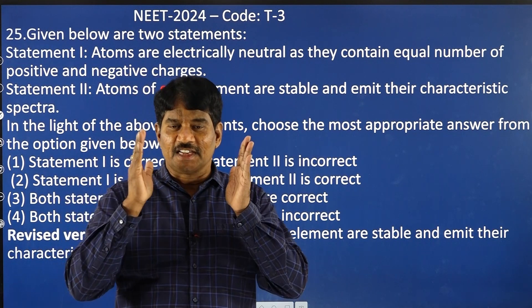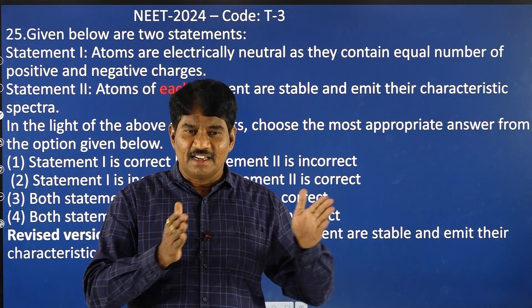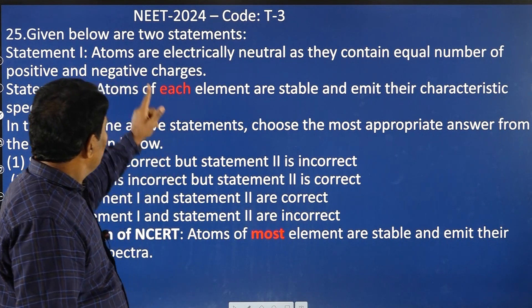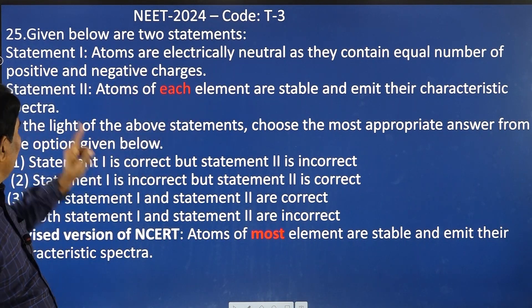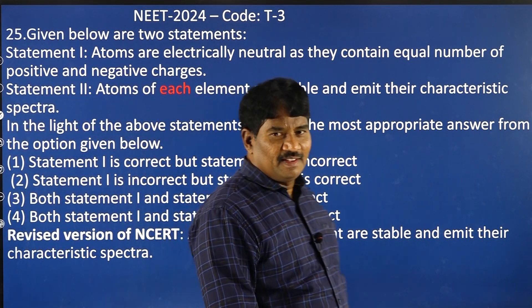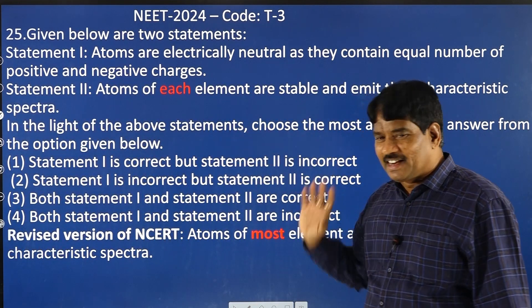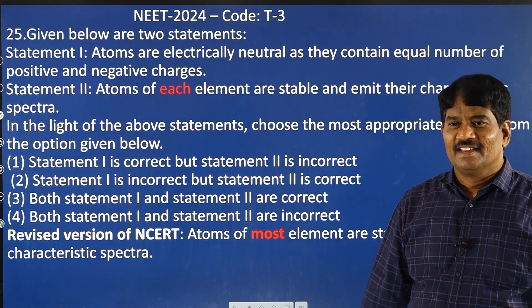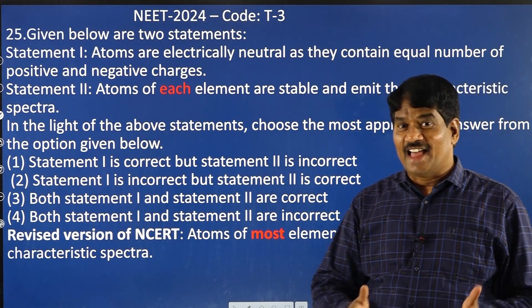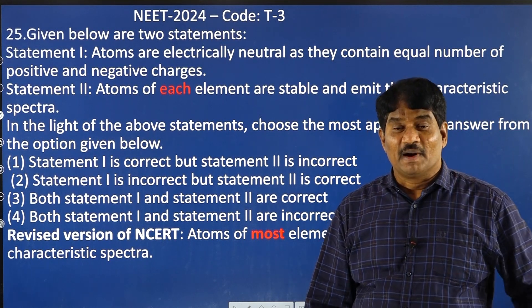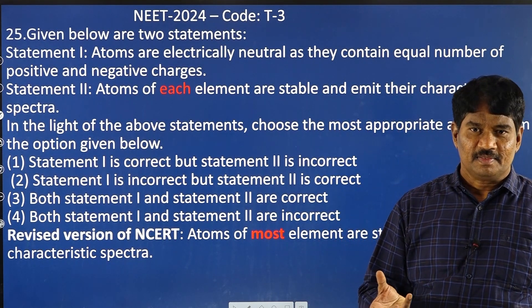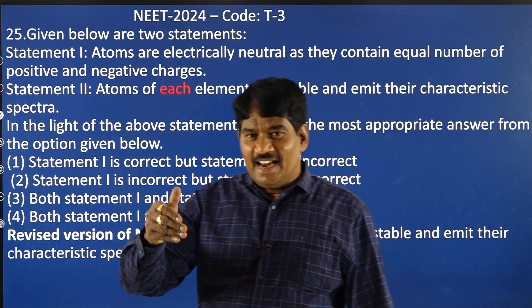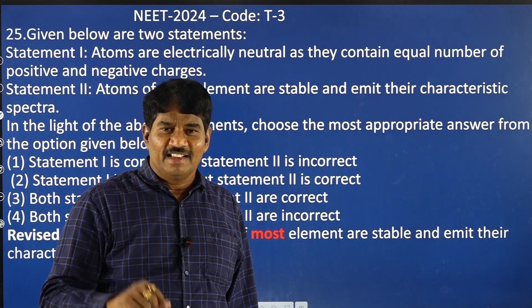One such instance occurred in the NEET 2024 in physics, in code T3, question number 25. Two statements are given, wonderful statements. Every student knows the answer for that. But there is some ambiguity. The reason for the ambiguity is in the latest version of the NCERT, they changed.